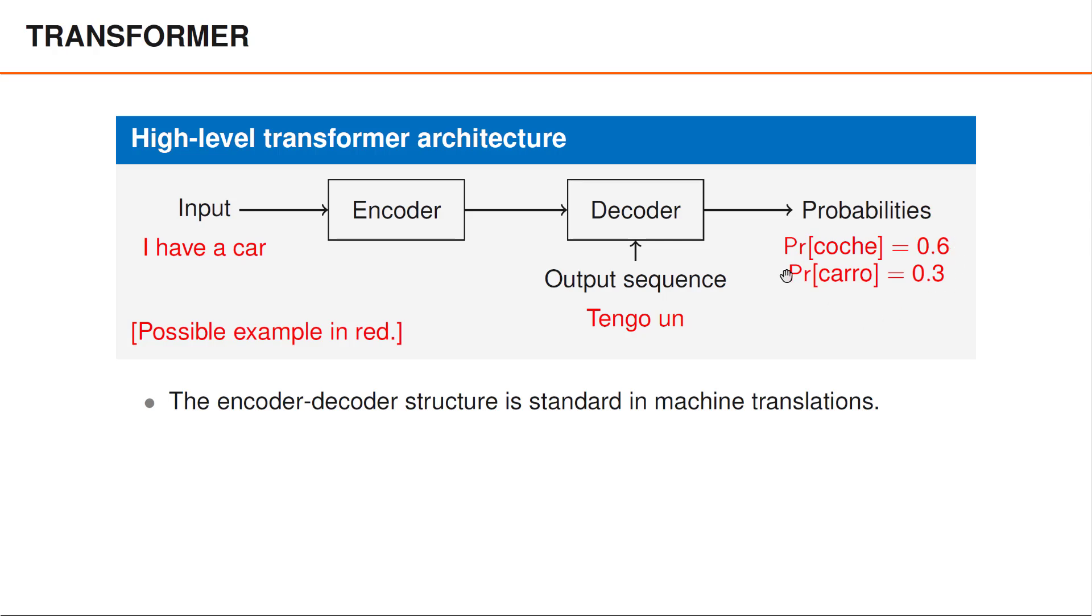perhaps the network would predict the next word to be Koche, with probability 0.6, Garro, with probability 0.3, and some other word with probability 0.1.